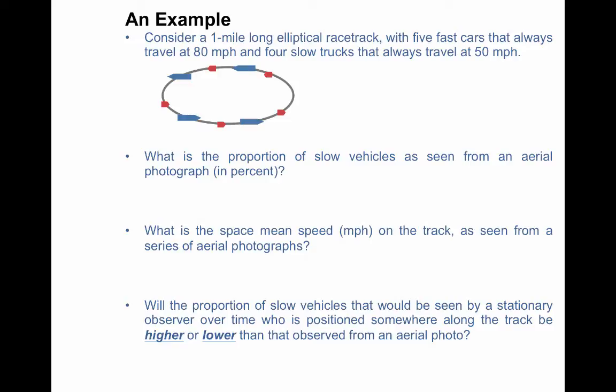In this case, we've got five fast cars, those are the red shapes that are traveling at 80 miles per hour, and four slow trucks that always travel at 50 miles per hour. And so in this closed system, you should note that the fast vehicles are able to pass the slow ones without any problem.